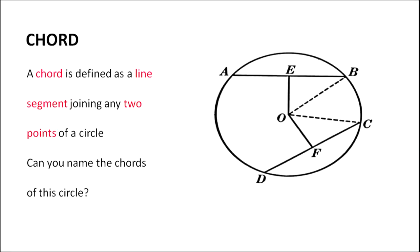The next important concept related to circles is chord. I have drawn a diagram here where the center is marked as O and I have drawn two line segments — line segment AB and line segment DC within the circle. A chord can be defined as a line segment joining any two points of a circle. Numerous points constitute a circle, so if we take any two points on the circle and join them, we get a chord. A chord is a line segment that can be measured and drawn within a circle.